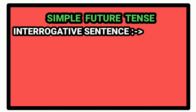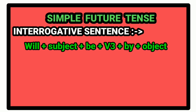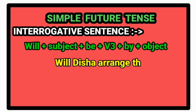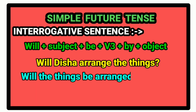For interrogative sentence in simple future tense, we follow the following rule. First of all, we write the auxiliary verb will. After that, subject. Then we write be, past participle form of the verb, preposition by, then the object. After that, question mark. For example, will Disha arrange the things? Passive voice will be: will the things be arranged by Disha?